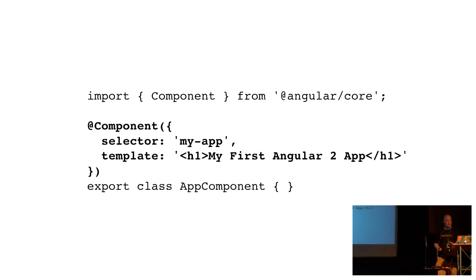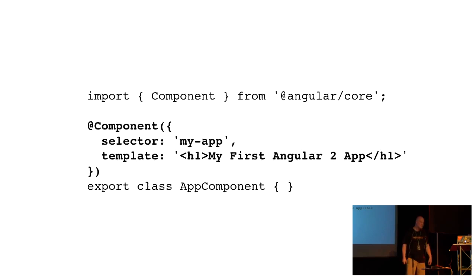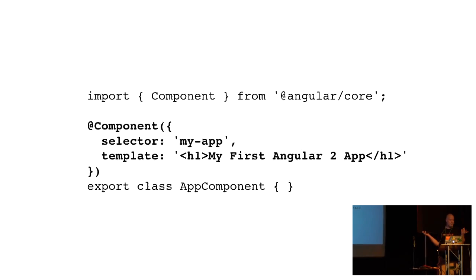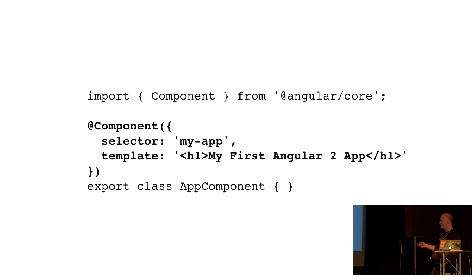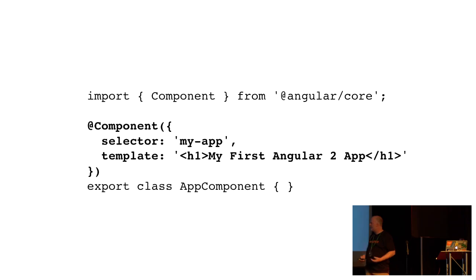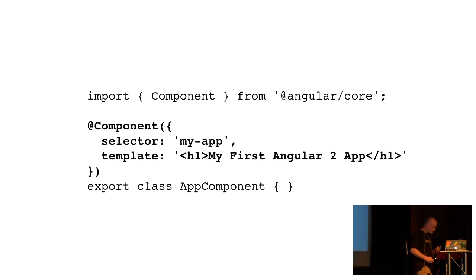Compare this to the declarative version using System.js modules. At the top, we import 'Component' from Angular core. Then we have our class called AppComponent, which is just a regular ES6 class. This is where we get into the decorator part — we have an '@' symbol followed by 'Component', and we're passing in the same object literal that defines the properties of that component. My preference would be this one. I think it's cleaner and expresses its intent more clearly than the imperative version.